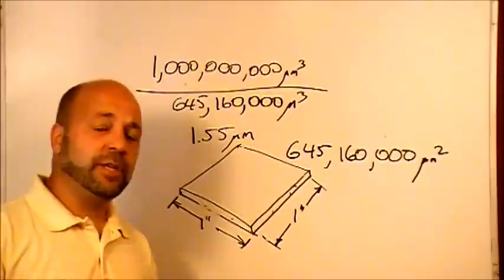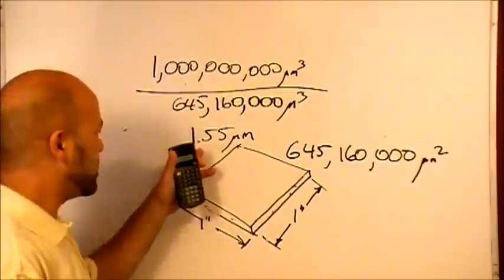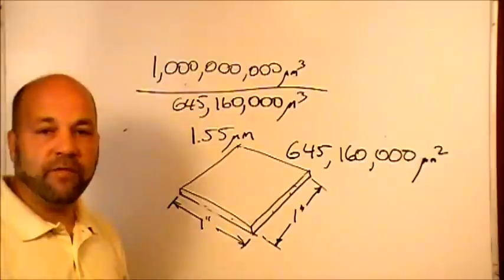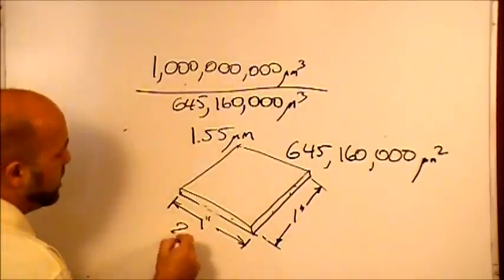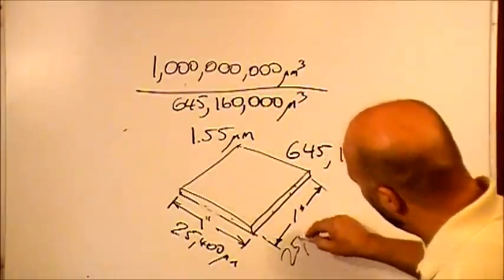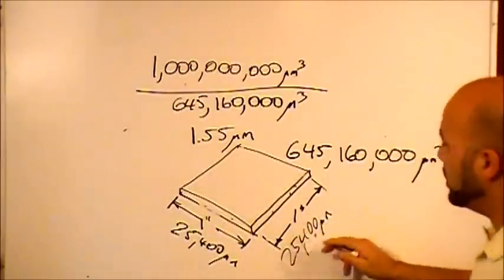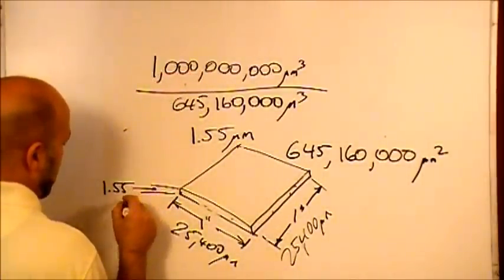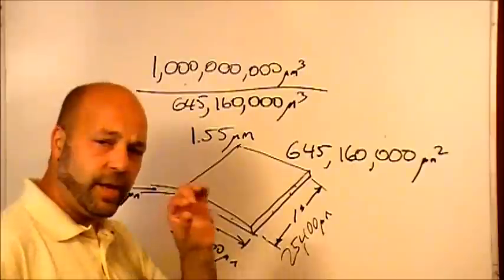A human hair, which I don't have a lot of, but averages on the thin side 17 microns and can go up to 70, 100, or a little bit more microns. So this is about 1/70th or 1/50th of a human hair thickness. So this ink film thickness is very thin. So you've got 25,400 microns in this direction, 25,400 microns in this direction, and 1.55 microns in that direction.